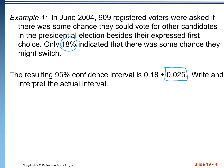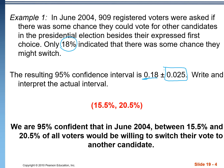To write and interpret the actual interval, we take 0.18, subtract 0.025 to get the lower end, and add 0.025 to get the upper end. We get 15.5% to 20.5%. What we're actually saying is that we're 95% confident that in June 2004, between 15.5% and 20.5% of all voters would be willing to switch their vote to another candidate. This is about the whole population of all voters, not just the sample — every time we take another sample, that result would change.